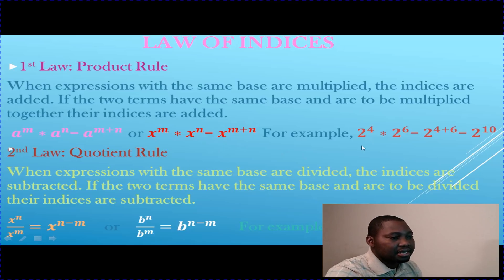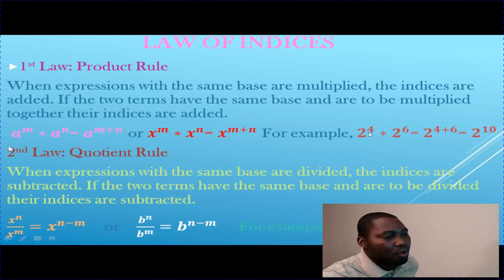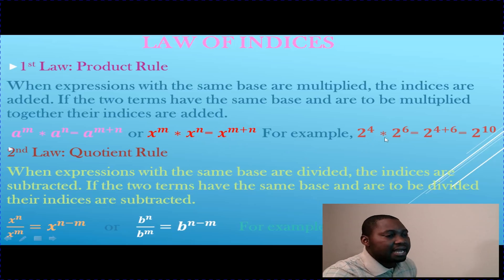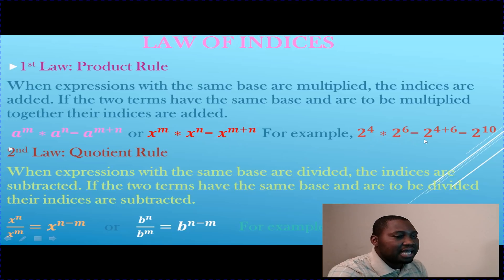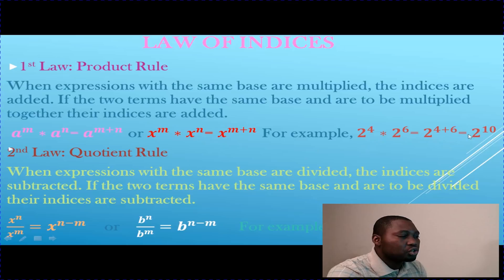Another example: if we have 2 to the power of 4 multiplied by 2 to the power of 6, that is going to equal 2 to the power of 4 plus 6, which simply equals 2 to the power of 10.